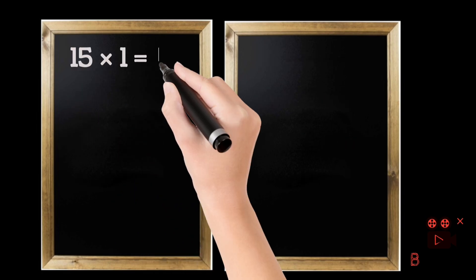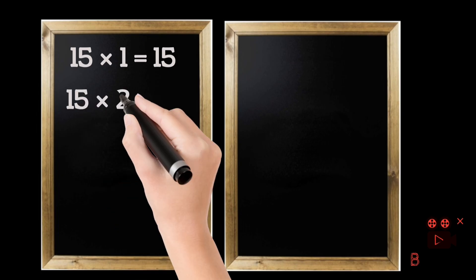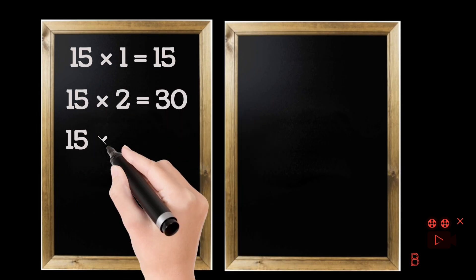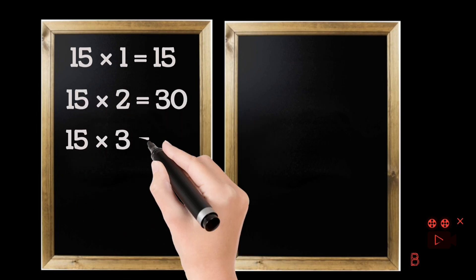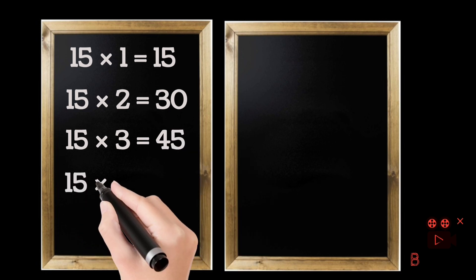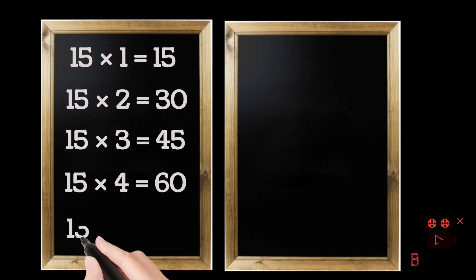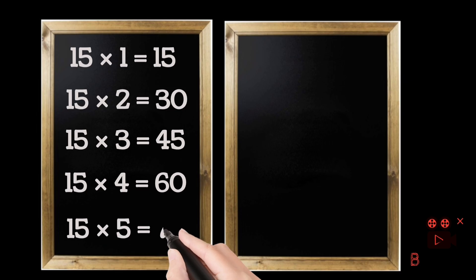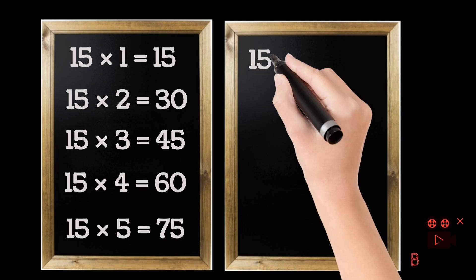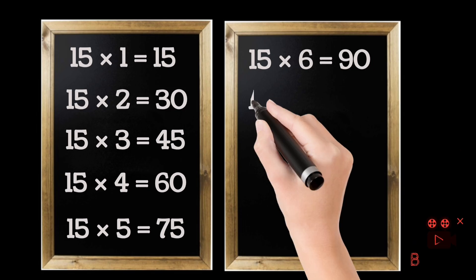15 ones are 15. 15 twos are 30. 15 threes are 45. 15 fours are 60. 15 fives are 75. 15 sixes are 90.